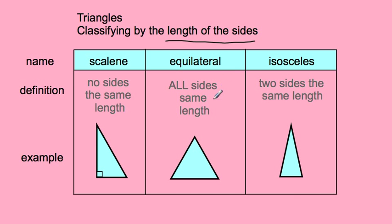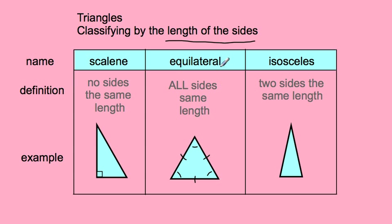If you have all sides having the same length, then you have what's called an equilateral triangle. You can almost see the word 'equal' in there, and 'lateral' means sides. Each one of these sides is exactly the same length, and each one of the angles is also exactly the same measurement.